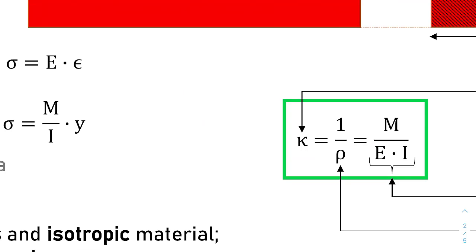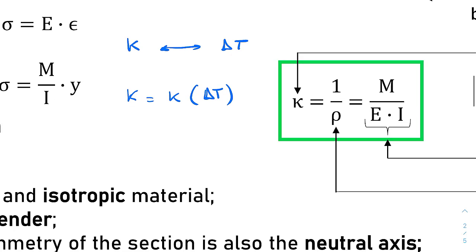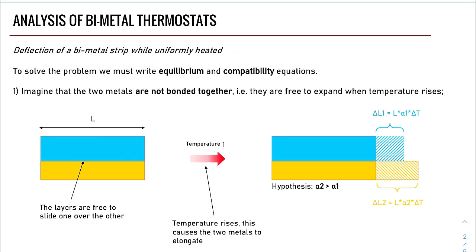The Timoshenko work has been to find a mathematical relationship between kappa, the curvature, and a delta temperature. He wanted to know how kappa varies if delta T varies, knowing of course all the physical, mechanical, and geometrical parameters. So let's dive into the actual work made by Timoshenko.